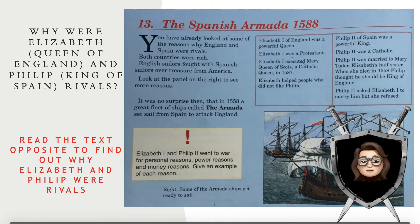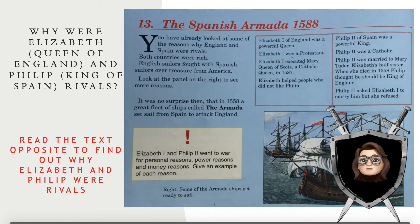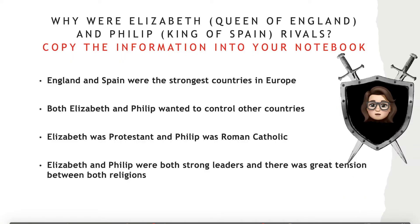On the screen you will be able to see a page of one of our textbooks. You can also find this in the attached PowerPoint on Google Classroom. The question asks: why were Elizabeth, the Queen of England, and Philip, the King of Spain, rivals? Read the text and find out why Elizabeth and Philip were rivals.